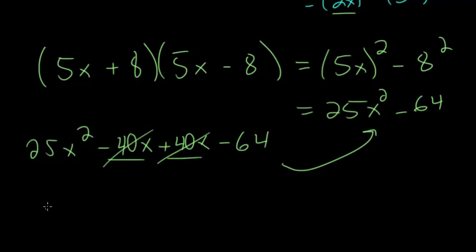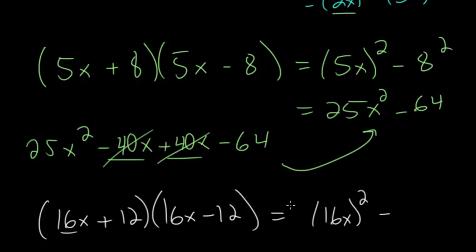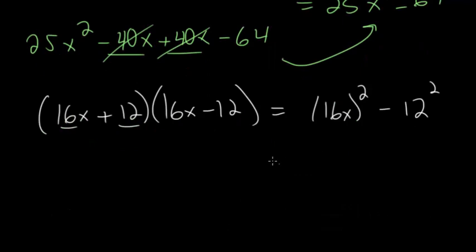One more example: (16x plus 12)(16x minus 12). We have a difference of two squares, so the answer is (16x) squared minus 12 squared. Multiplying those out gives 256x squared minus 144.